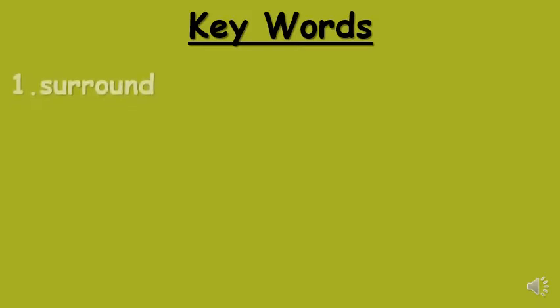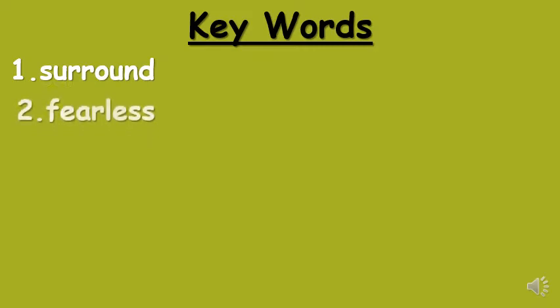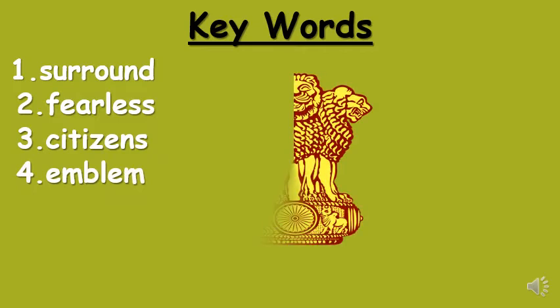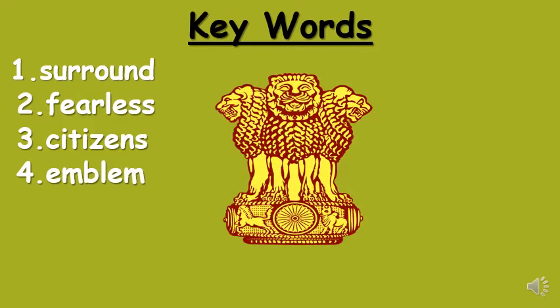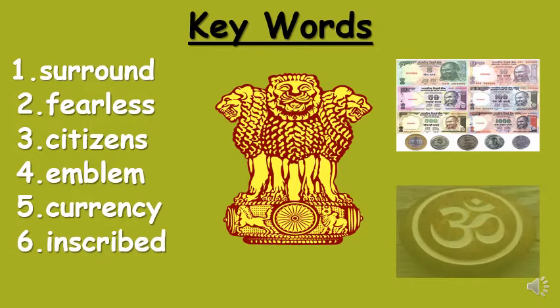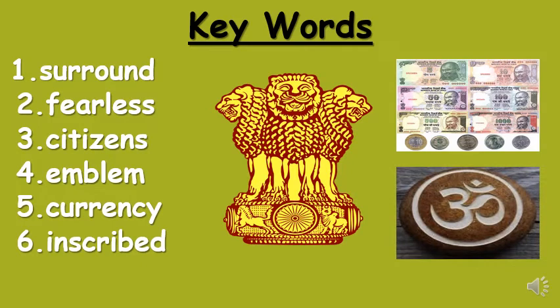Let's start with the keywords. First word is surround, fearless, citizens, emblem — this is the picture of emblem. Currency — this picture shows the currency of India. Inscribed means something is written or carved on wood, stone or metal, like Om is carved on wood. Last word is composed.